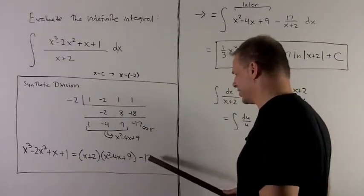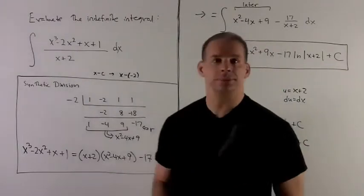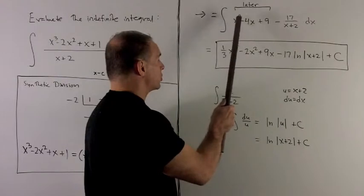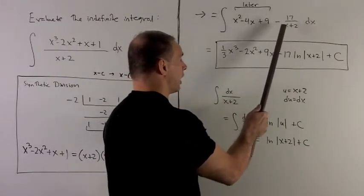Now I can use this to get to work on the antiderivative. We are going to have x squared minus 4x plus 9 minus 17 over x plus 2.